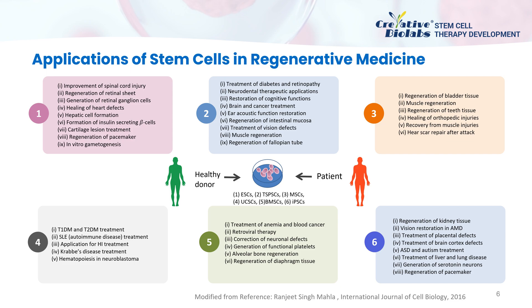For successful regenerative outcomes, transplanted stem cells must survive, proliferate, and differentiate in a site-specific manner and integrate into the host circulatory system. ESCs can be applied to improve spinal cord injuries, treat cardiovascular disease, liver injuries, etc. Tissue-specific progenitor stem cells can be applied to treat diabetes, neurological diseases, and cancer.